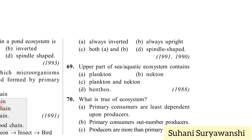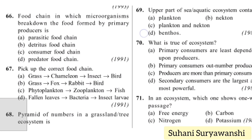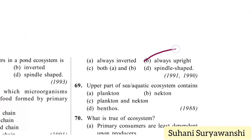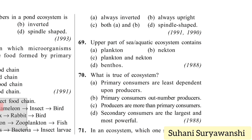The pyramid of numbers in a grassland or tree ecosystem is always upright — option B. The upper part of a sea or aquatic ecosystem contains planktons. Benthos are at the bottom, so the correct answer is planktons — option A.